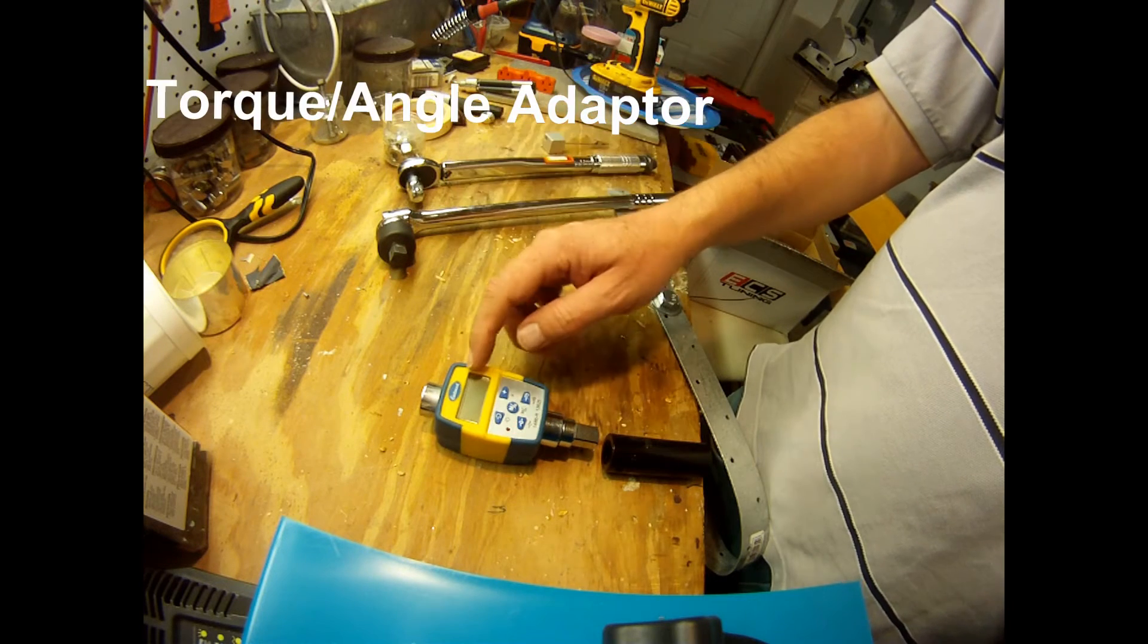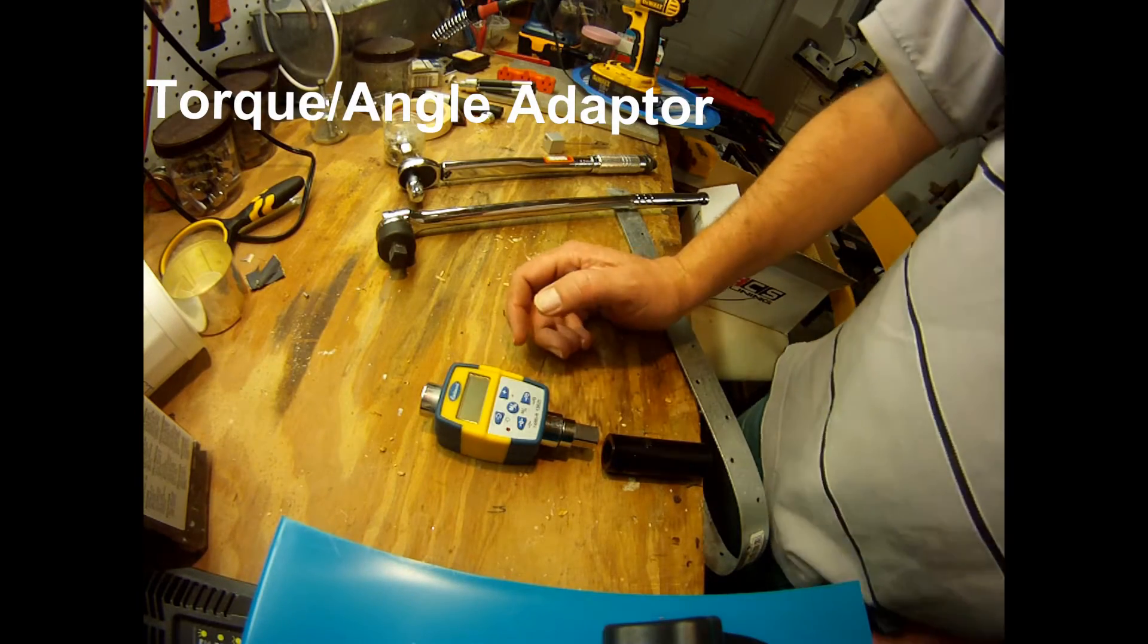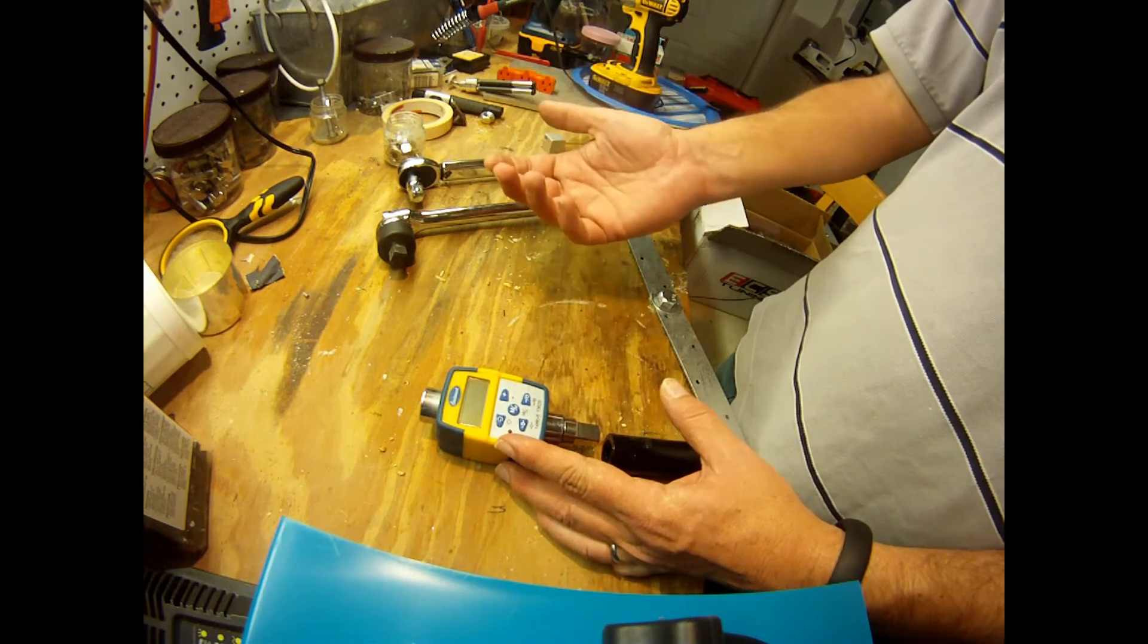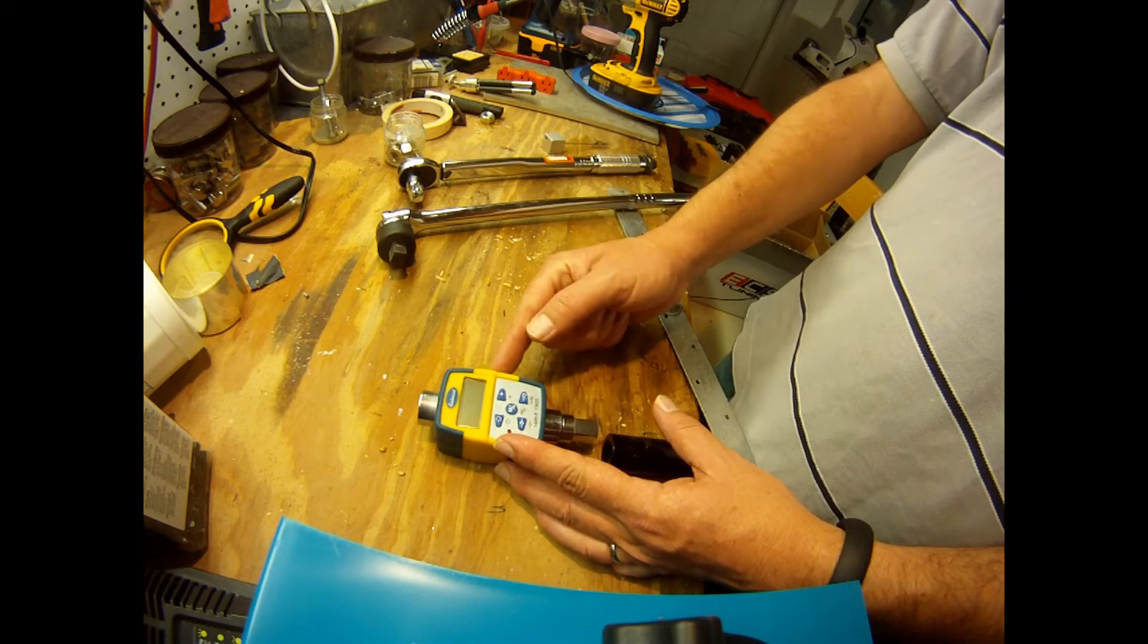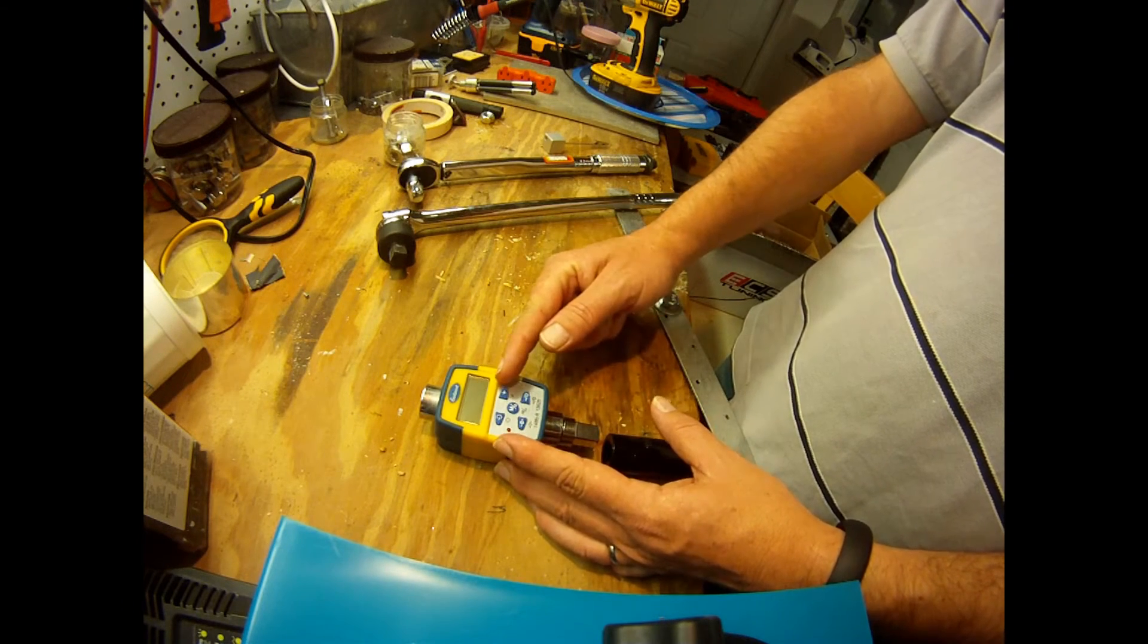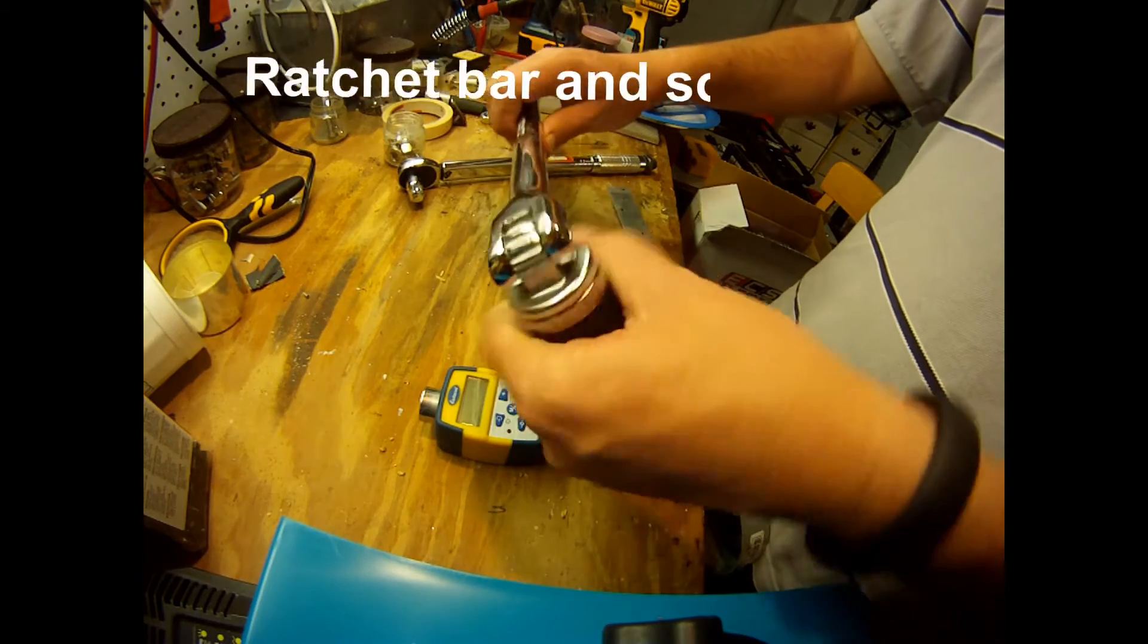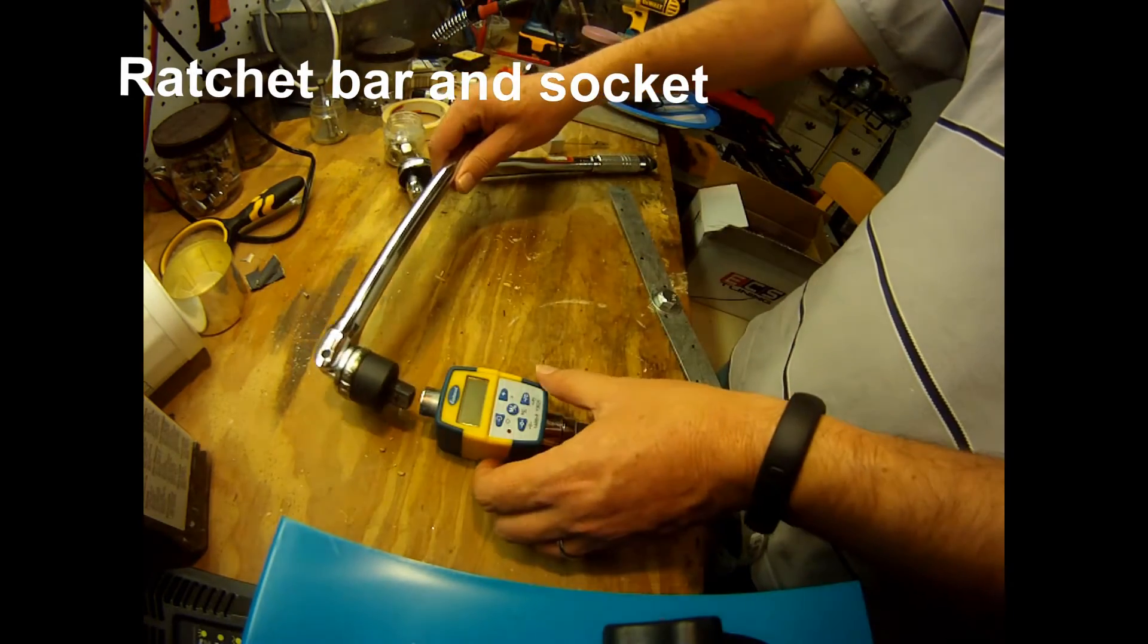This is a torque adapter with angle measurement. You can go up to a specific torque and then, for example, 45 degrees after that point. This type of adapter tells you the proper torque and the angle that you have traveled. You use a simple ratchet tool that connects on the top and a socket that connects on the bottom.